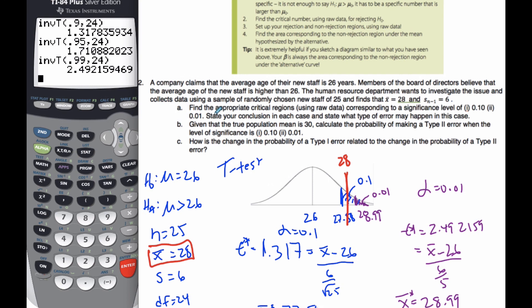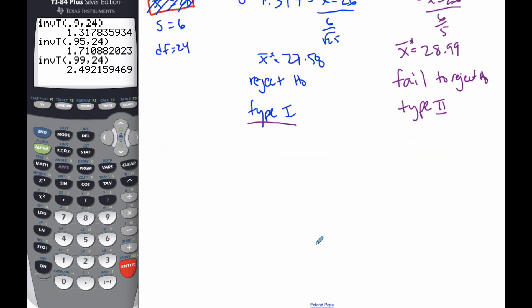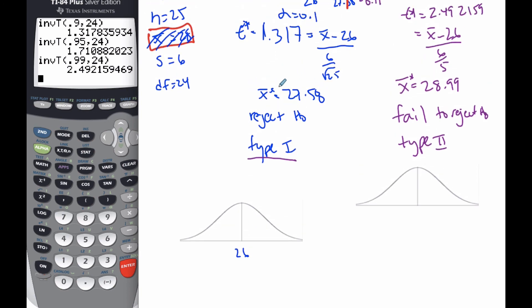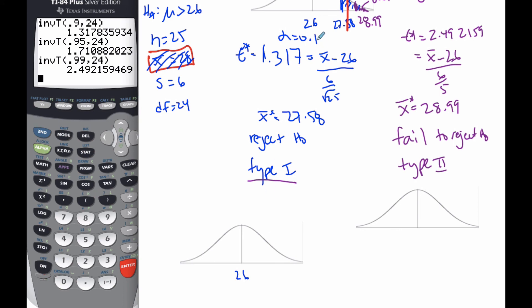Now looking back at the question, given that the true population mean is 30, calculate the probability of making a Type 2 error when the significance level is both values. To make a Type 2 error, I don't need to consider my sample statistic. I think it's 26, and for α = 0.1, my critical region is defined at 27.58. Here's the critical region.